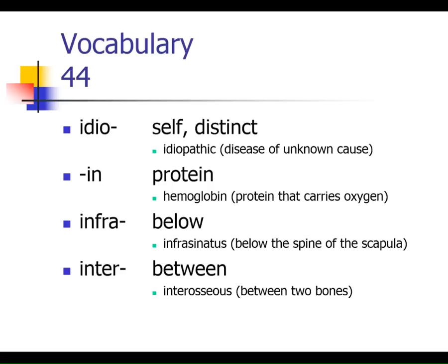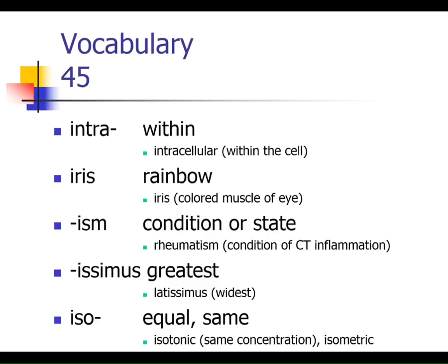'Infra' means below — you'll see the infraspinatus muscle next semester as one of the rotator cuff muscles, located below the spine of the scapula. 'Inter' means between — intervertebral foramen, intervertebral disc, intercostal muscles. 'Intra' means within, as in intracellular fluid. 'Iris' means rainbow — the iris is the colored muscle of the eye. 'Ism' is a state or condition. 'Issimus' means the greatest, as in latissimus, the widest muscle of the back. 'Iso' means same or equal.